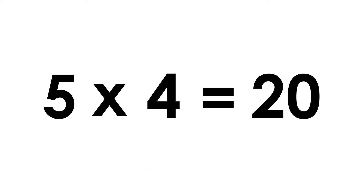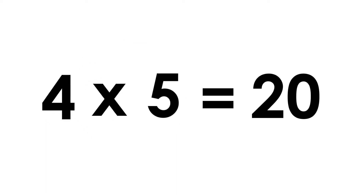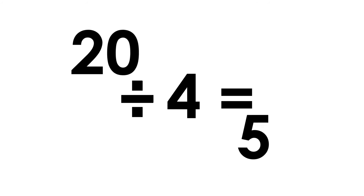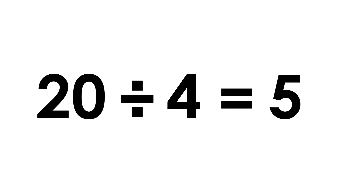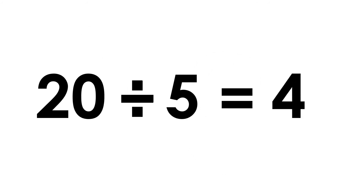Five fours are twenty. Four fives are twenty. Twenty divided by four is five. Twenty divided by five is four.